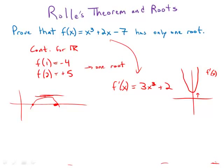So therefore, we have proved that even though f has one root, it has only one root. And so that is an example of an argument about roots using Rolle's theorem.